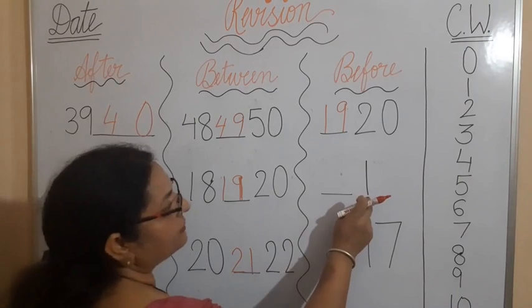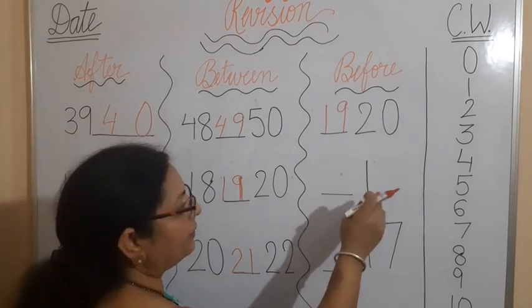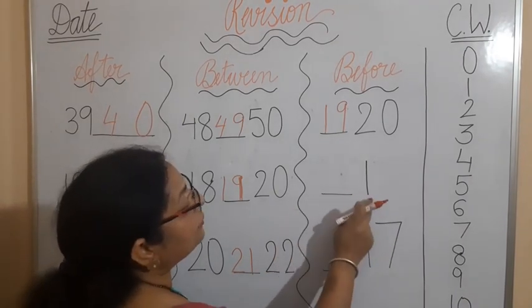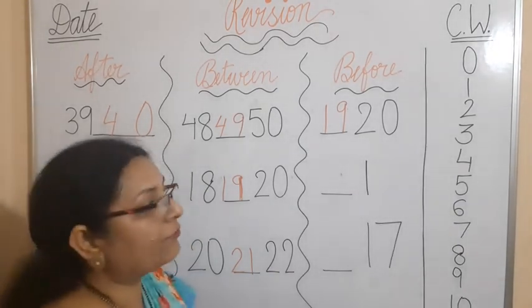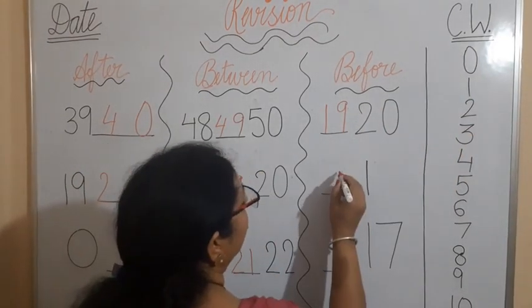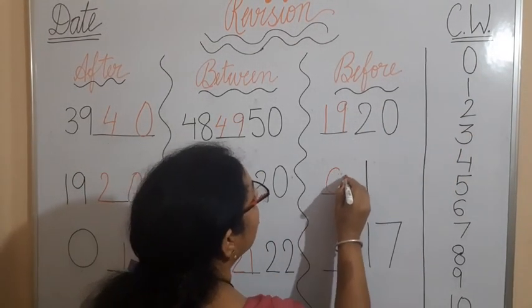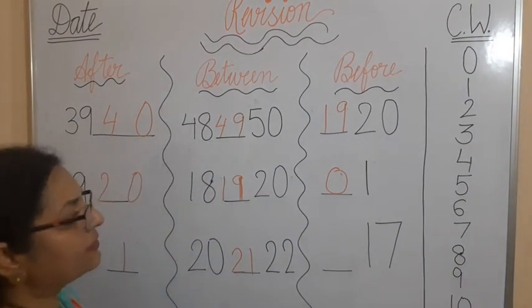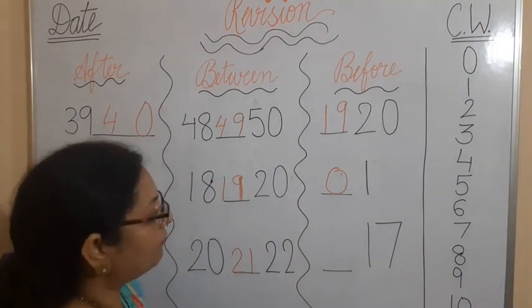Second one is 1. It is very easy for you. You can do it yourself also. So dash 1. What comes before 1? 0. You have to write 0. 0 comes before 1.